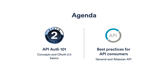So today we'll cover two things. Firstly, we'll give a bit of background around API OAuth in general and focus around OAuth, which is our industry standard and it's where a lot of our development is focused on. Then we'll switch gears and talk about best practices for when you're developing your apps to call our APIs. So let's get started.